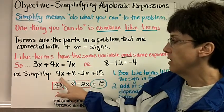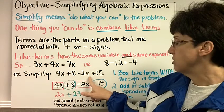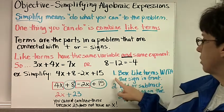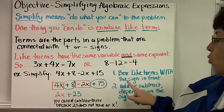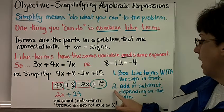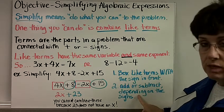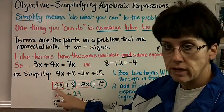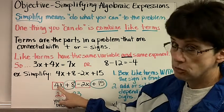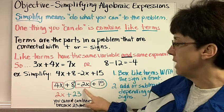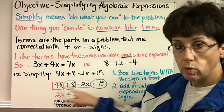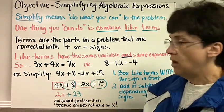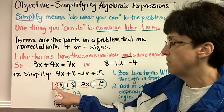Here's an example. Simplify 4x plus 8 minus 2x plus 15. Here are the steps. Number one, box like terms with the sign in front of it. Add or subtract depending on what the signs are. So I wrote the problem again, and I put a red box around the 4x. I put another red box around the negative 2x, because I need to know what the sign is of that term. And then I circled the plus 8 and I circled the plus 15. Everything is going to have a sign, except for the very first number if it's positive.